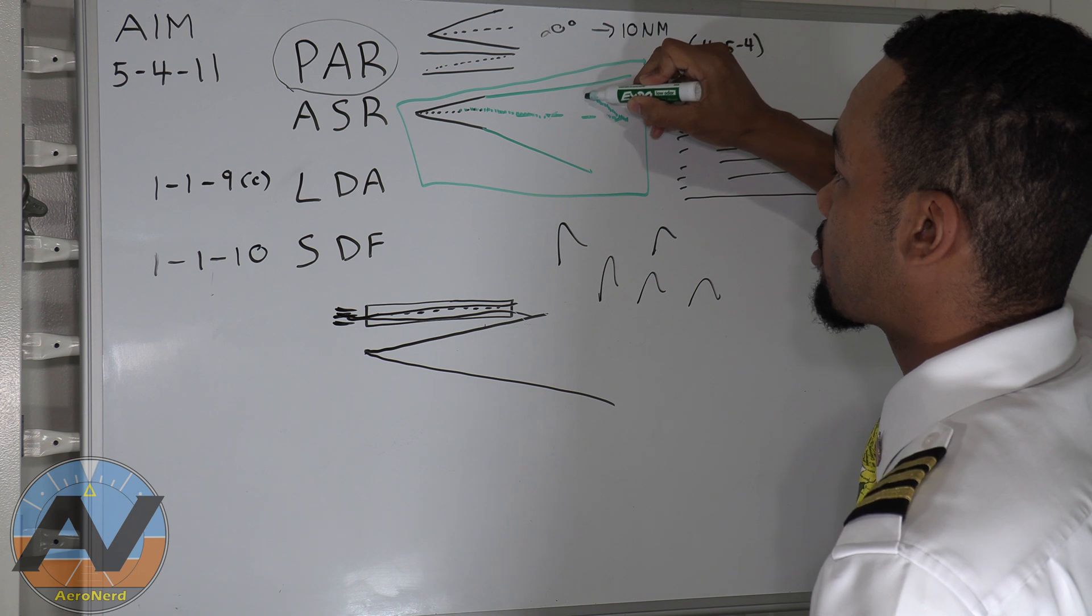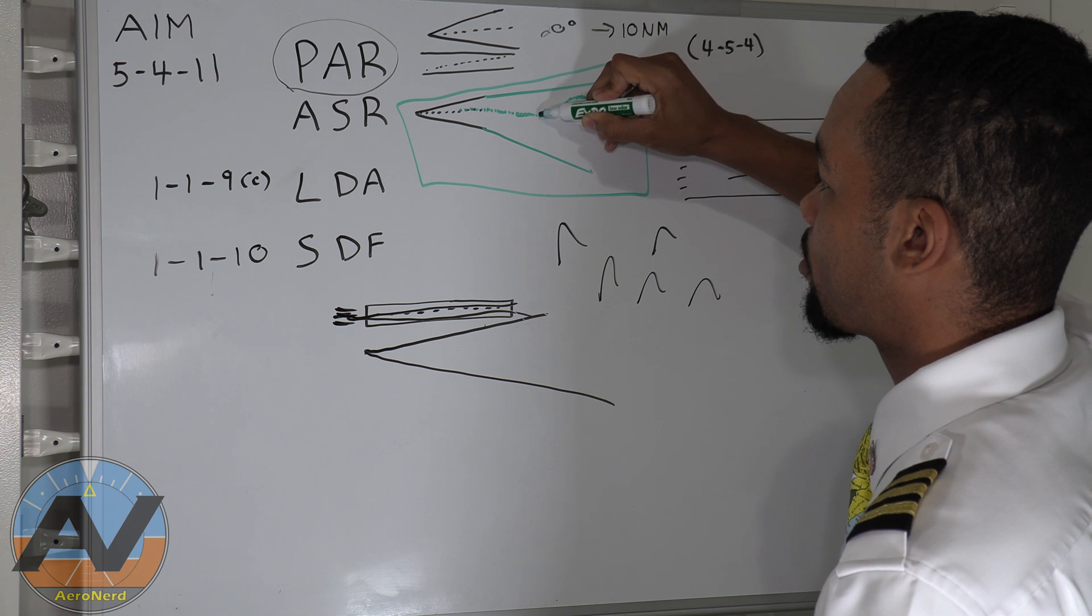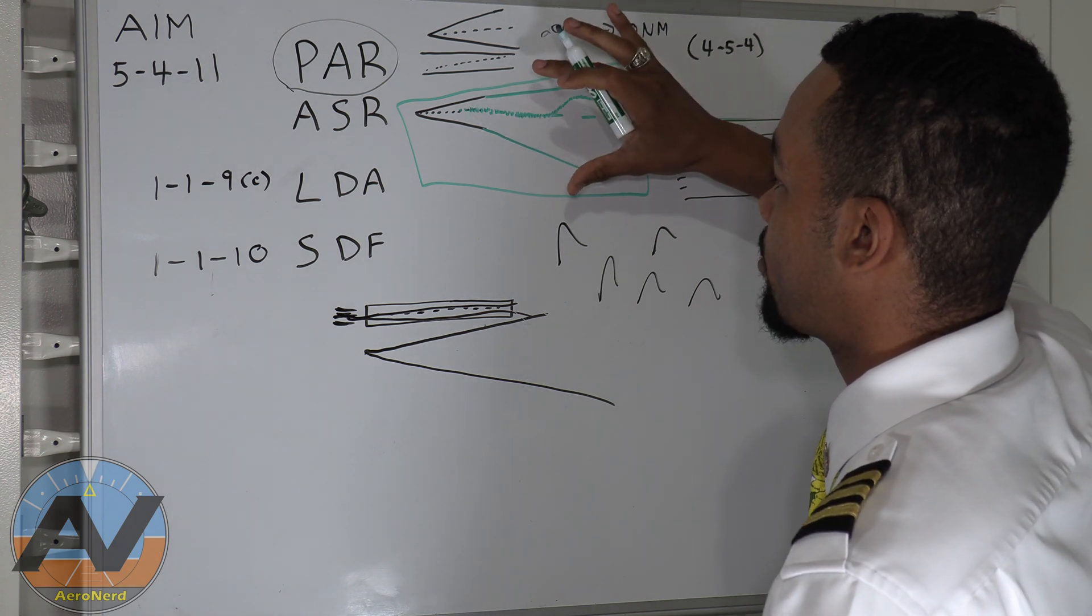They're going to see your aircraft coming in, and they're going to say, Hey, Cessna 777 Hotel Echo, turn left 10 degrees, re-intercept the final approach course on this heading. And then they'll literally guide you in from the top down view.